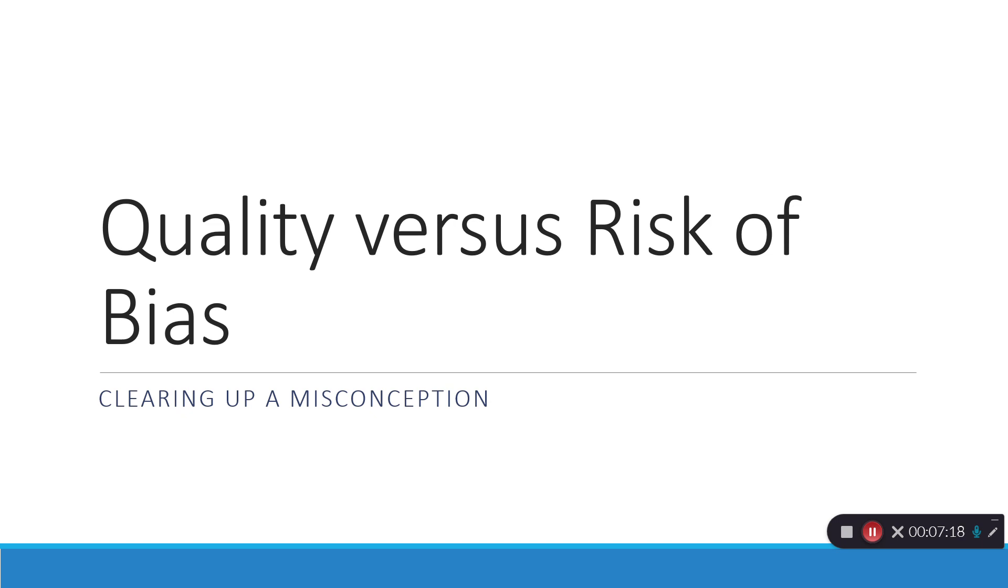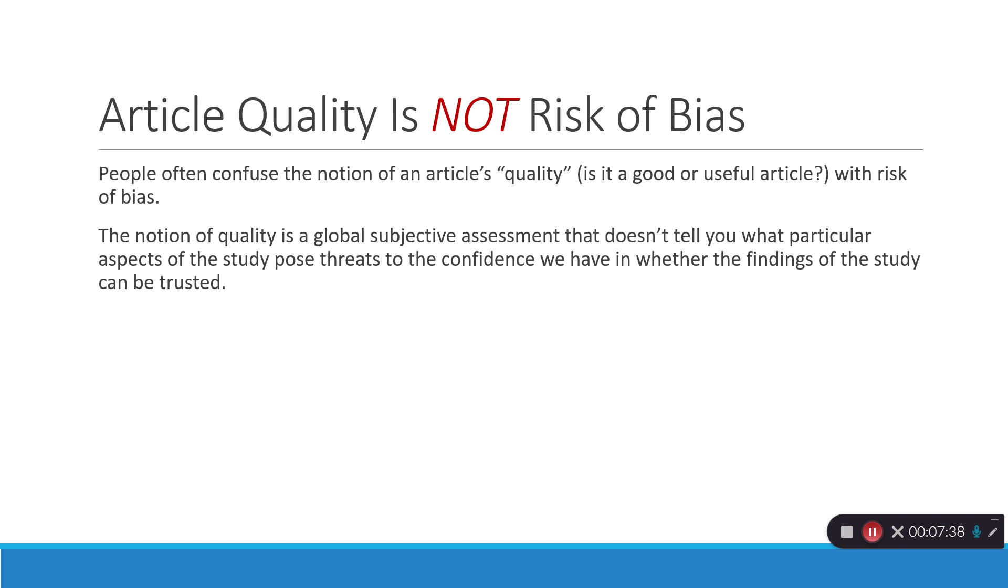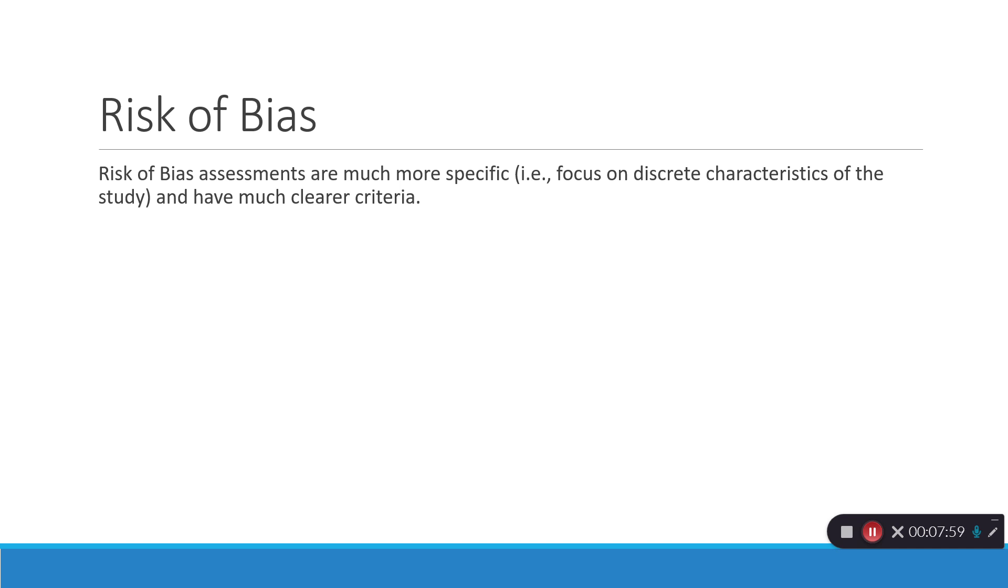Now, I want to clear up a misconception about quality versus risk of bias. Article quality is not the same thing as risk of bias. And people often confuse this notion of an article's quality. Is it a good or useful article? Good or useful for what? And they confuse that with risk of bias. The notion of quality is more of a global subjective assessment that doesn't really tell you what particular aspects of the study pose threats to the confidence that we can have and whether the findings of the study can be trusted. And we want to avoid mushy, subjective assessments. Risk of bias assessments are much more specific. That is, they focus on discrete characteristics of the study. And for this, they have much clearer criteria than, well, was it useful or was it a good study or did you like it? So, when evaluating a study for systematic review and meta-analysis, we want to focus on risk of bias.